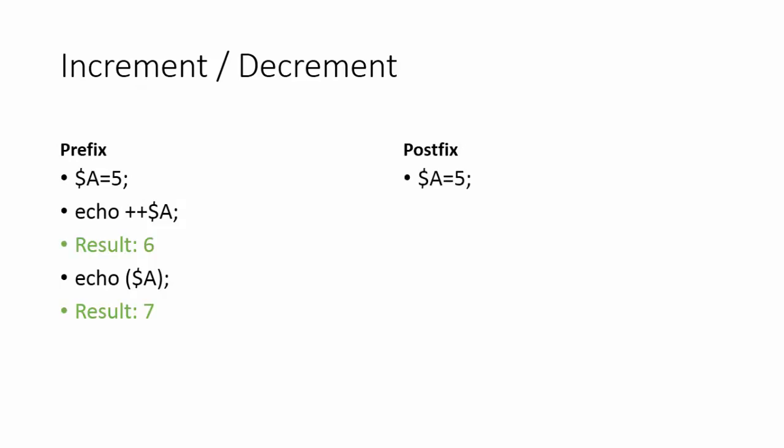In postfix increment, if you have the same variable a equals 5 and you put the two plus signs after the variable (a++), the first output will still be 5 — the same as before. Then if you echo it again, the result will be 6. So in prefix, the increment is applied at the start, while in postfix, the increment happens in the second stage.